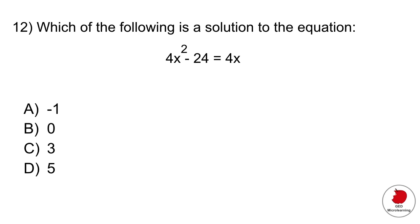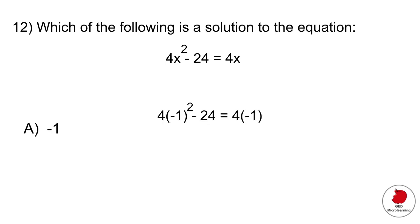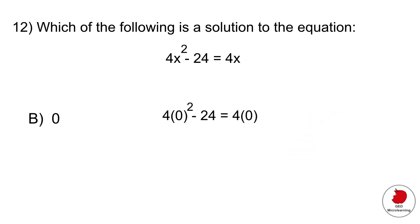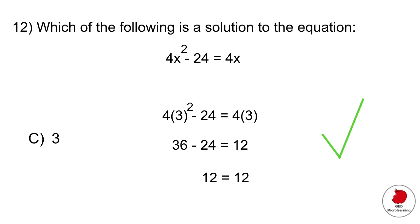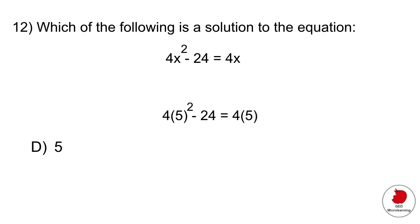The next question asks which of the following is a solution to the equation. You plug each answer option in for x until you find the right one. Option A, minus 1: you get minus 4 minus 24 equals minus 4 — incorrect. Option B: gives minus 24 equals 0 — also incorrect. Option C, plug in 3 — that is the correct option. Option D gives 76 not equal to 20 — incorrect.